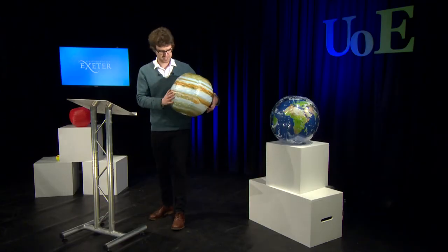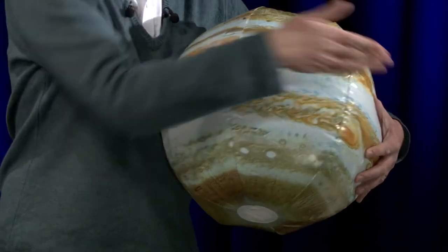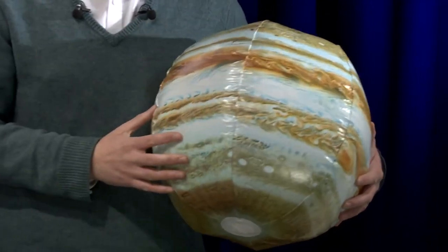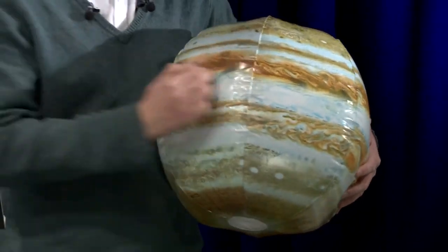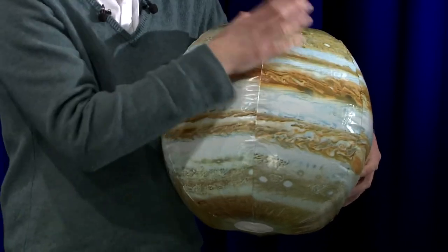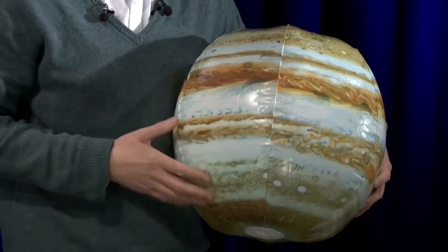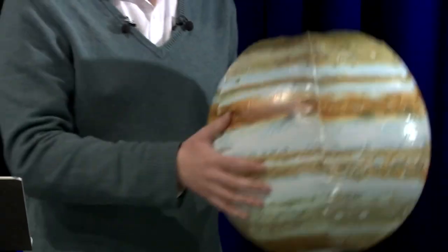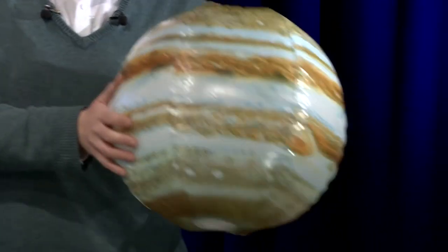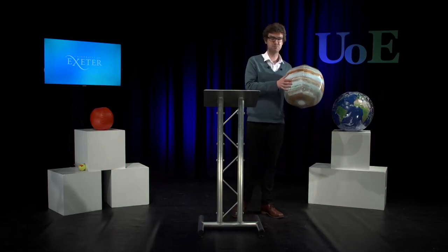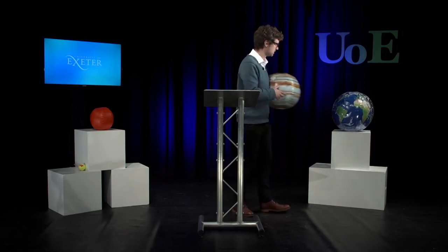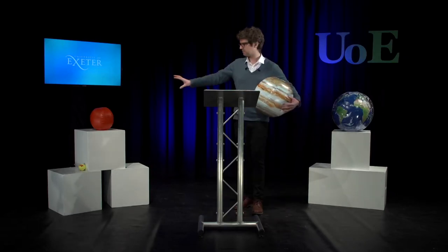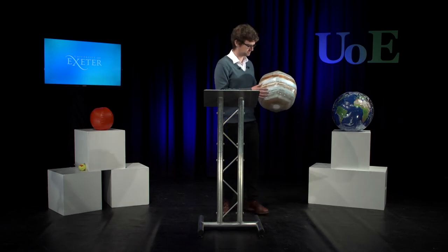It turns out that the thing that separates these different kinds of clouds are jet streams — there are jet streams crisscrossing the planet between all of these different stripes. On Jupiter it turns out there are about 15 jet streams in total; on Earth there's maybe four; on Mars maybe only two.